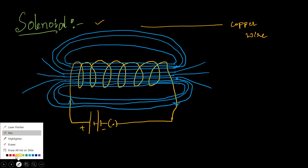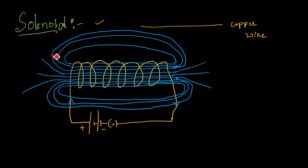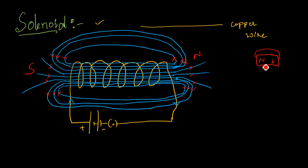Here you have to observe: the current is moving and reaching to this point, so the magnetic field also will reach here. We can consider this side is the south pole. On the other side, the magnetic field is leaving, so that is the north pole. The magnetic field always goes from north pole to south pole — if it is leaving, it's a north pole; if it is reaching, it's a south pole.